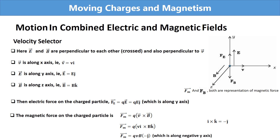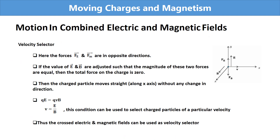Here Fb and Fe are representations of the magnetic force and electric force respectively. From the figure, we see these two forces are in opposite directions. If the electric and magnetic fields are adjusted such that the magnitudes of these two forces are equal, the total force on the charge is zero. When the total force is zero, the charged particle moves straight without any change in direction. Equating the electric and magnetic forces: QE = QVB, giving us velocity V = E / B.